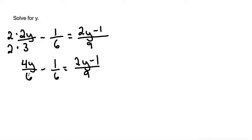Now that we have common denominators, we can combine by subtracting the numerators, and the denominator stays the same. So it will be 4y minus 1 over 6 is equal to 2y minus 1 over 9.